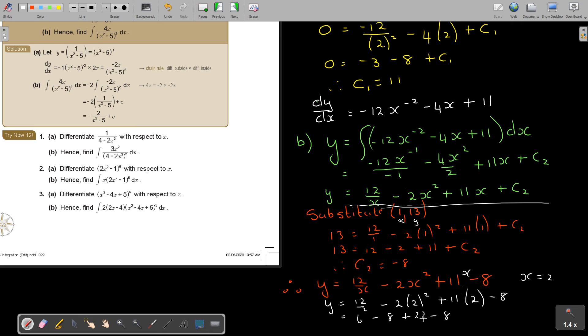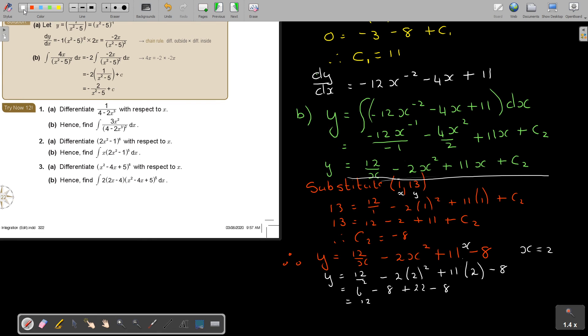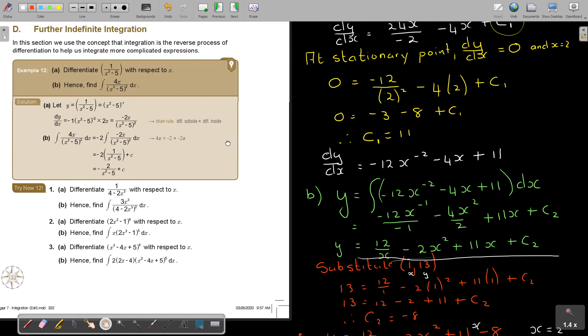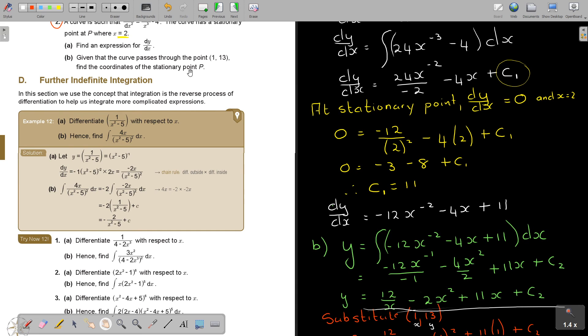Now we're going to try again. So 6 minus 8 plus 22 minus 8 equals 12. It should have been 12. Therefore, my point P is 2 and 12. Find the coordinate of the stationary point. That was the question. Not that difficult.